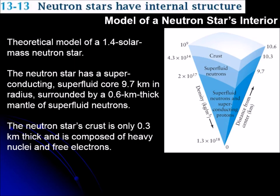Neutron stars are extremely dense. According to models, they have a diameter of about 20 kilometers or so — the size of a small town — and they are extremely dense because they are at nuclear density. They have a certain structure that we can see in this drawing.